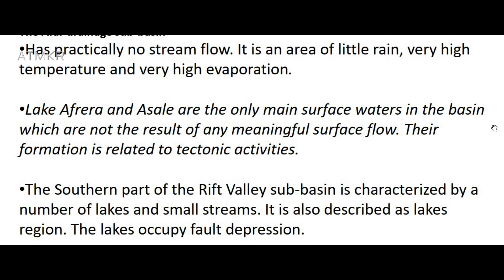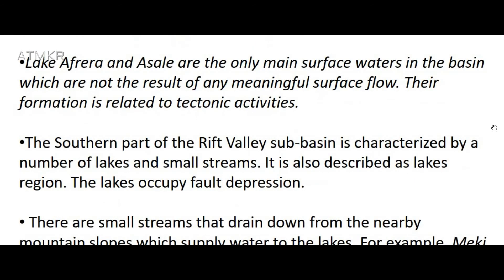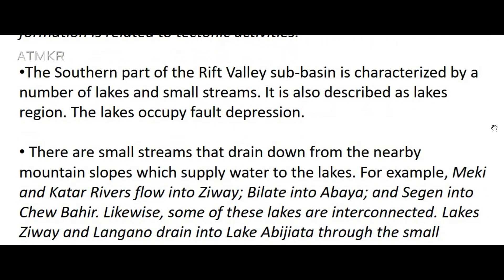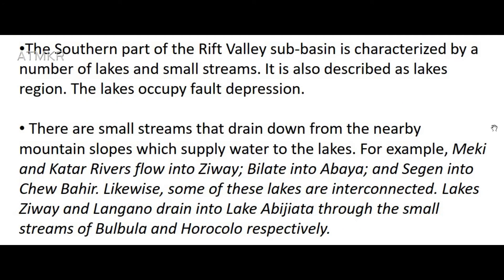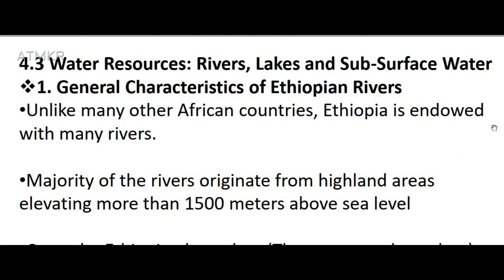The southern part of the Rift Valley sub-basin is characterized by a number of lakes and small streams and is also described as the lakes region. The lakes occupy fault depressions. There are small streams that drain down from nearby mountain slopes which supply water to the lakes. For example, Meki and Ketar rivers flow into Ziway, Bilate into Abaya, and Segen into Chamo. Some of these lakes are interconnected; Lakes Ziway and Langano drain into Lake Abiijata through the small streams of Bulbulo and Horakelo respectively.